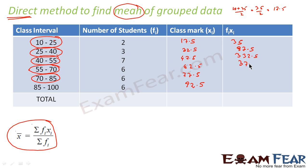6 into 62.5 is how much? 375. Again, 77.5 into 6 is how much? 465. 92.5 into 6 is how much? 555. So this is the value of fi xi, correct. I have xi's, I have fi xi.